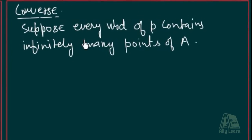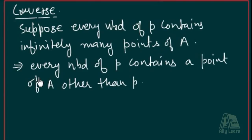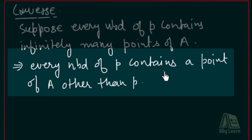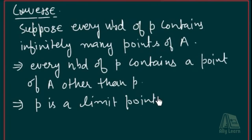Suppose every neighborhood of P contains infinitely many points of A. This implies every neighborhood of P contains a point of A other than P, which implies P is a limit point of A.